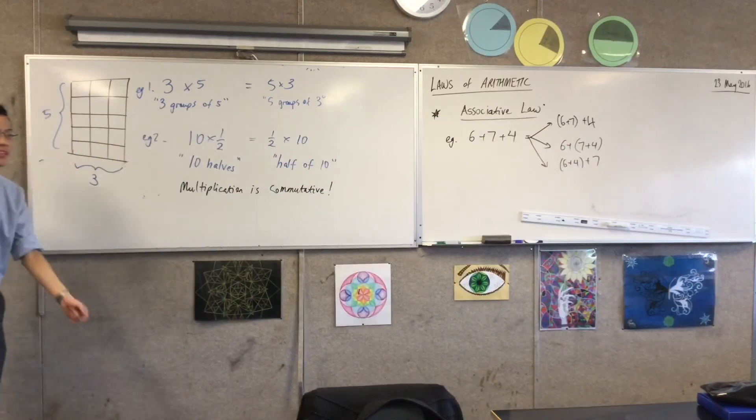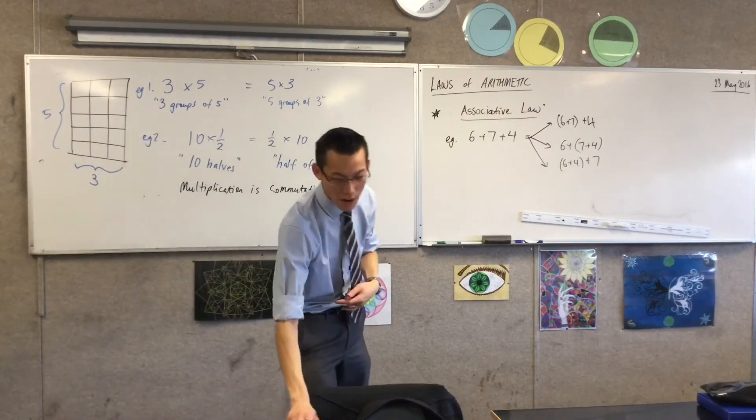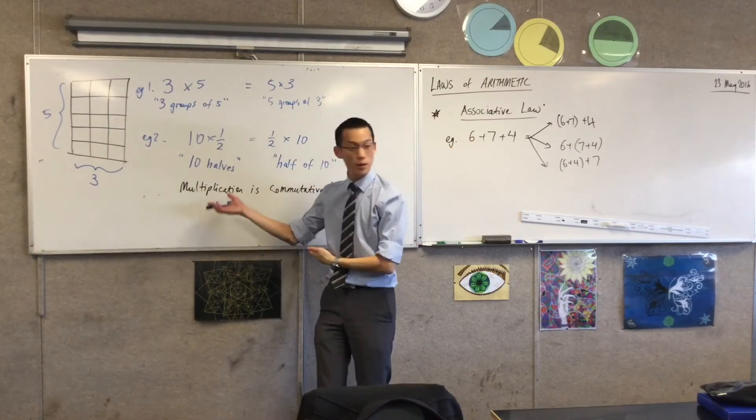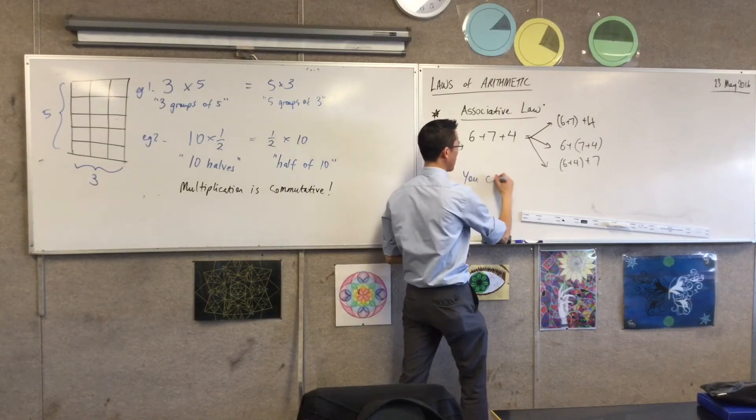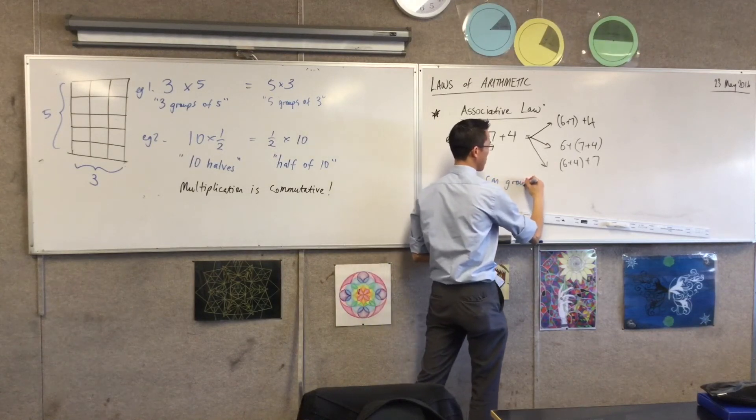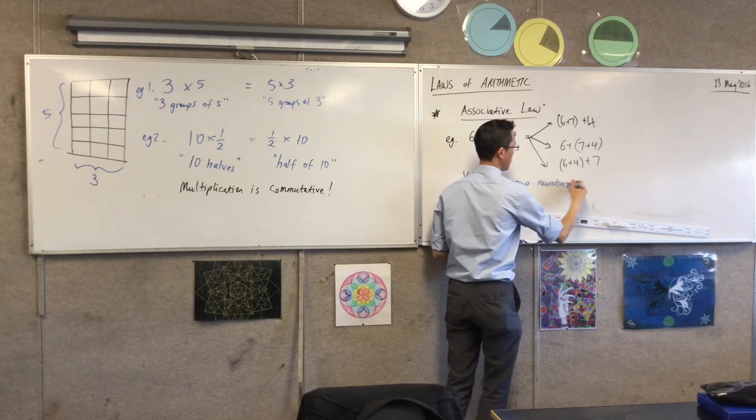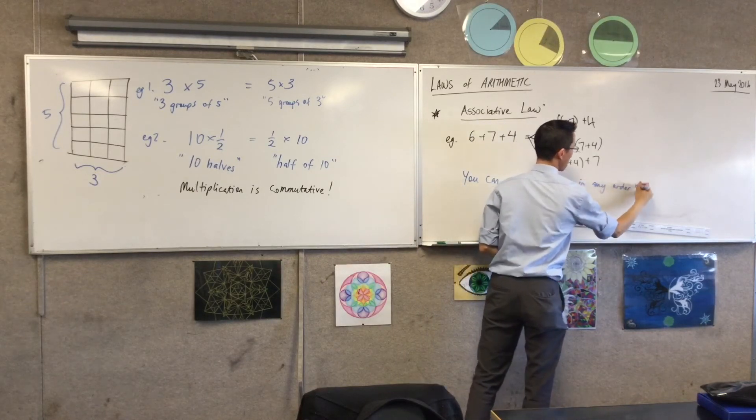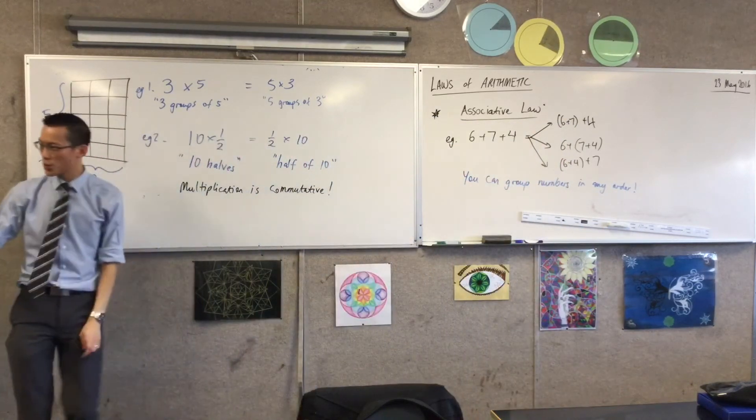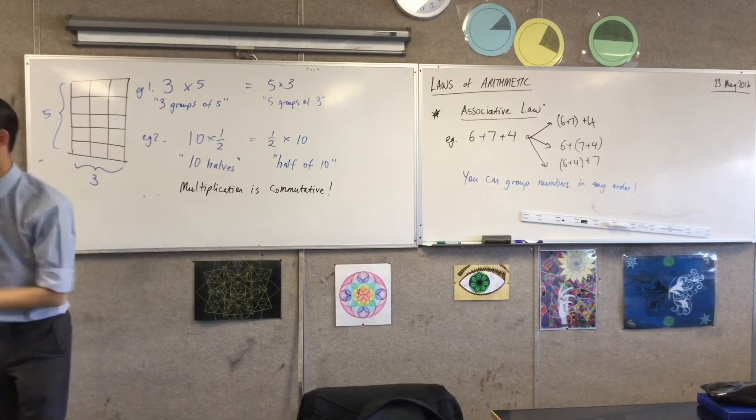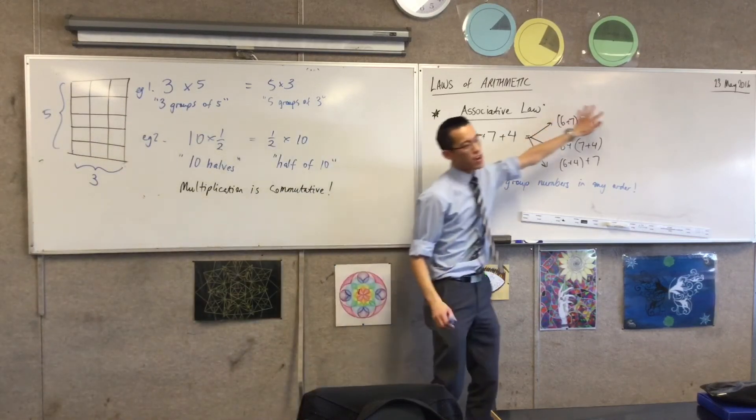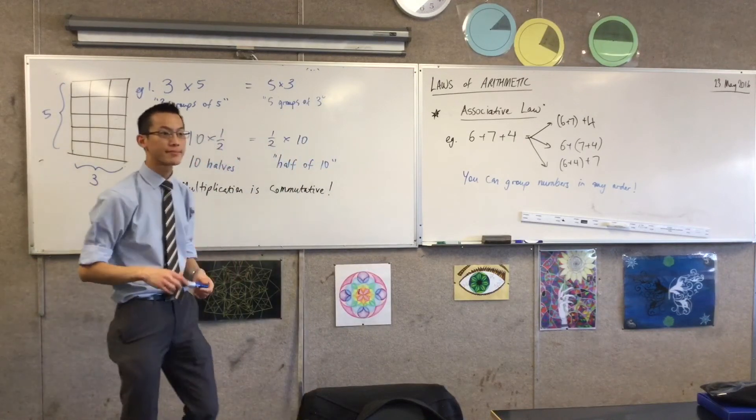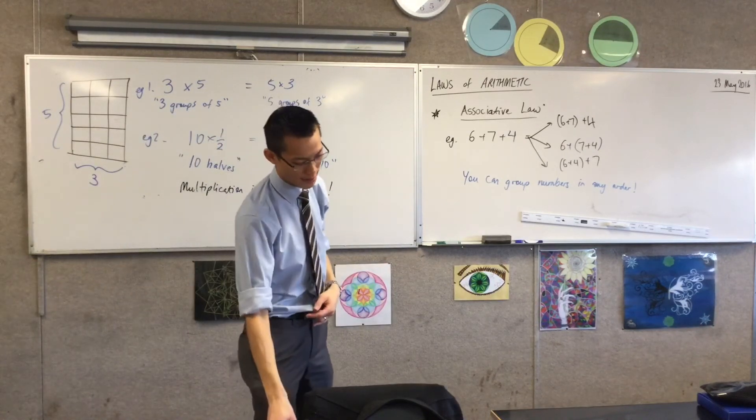Now, this idea of the associated law, right? Maybe you want to summarize it in this way. For addition, and for multiplication, you can group numbers. Is it like using brackets? That's exactly what it is. Right? Because brackets, we've seen in order of operations, they're what you should do first. Right? But you can see here, no matter where you put the brackets, you always get the same thing, which is kind of nice.